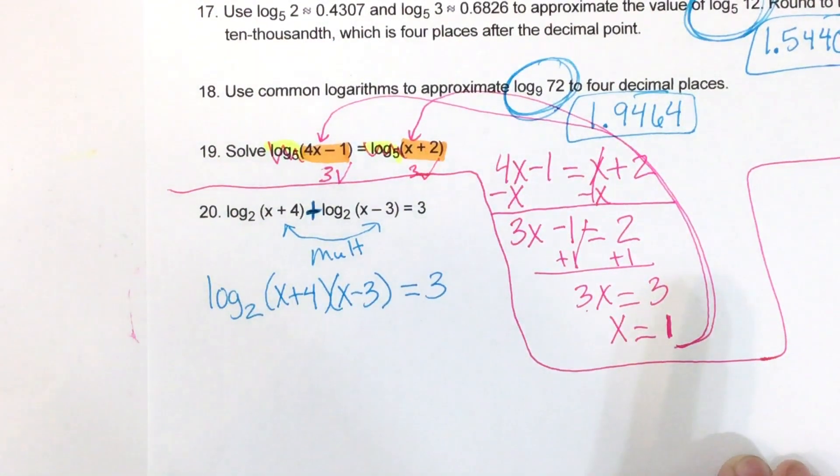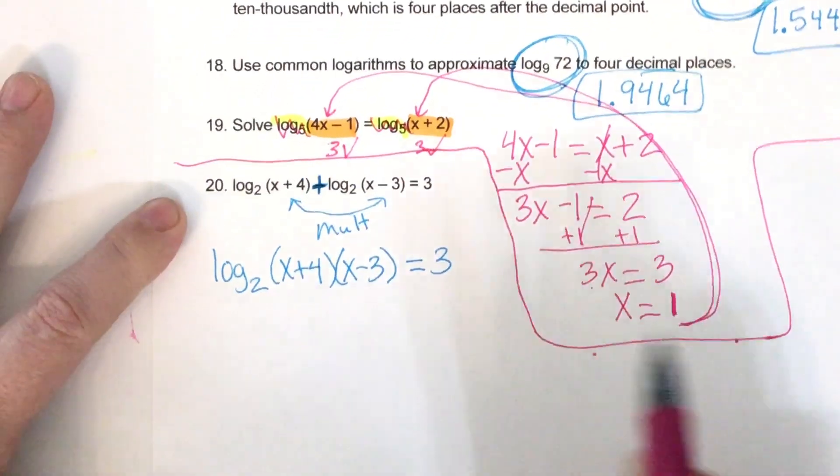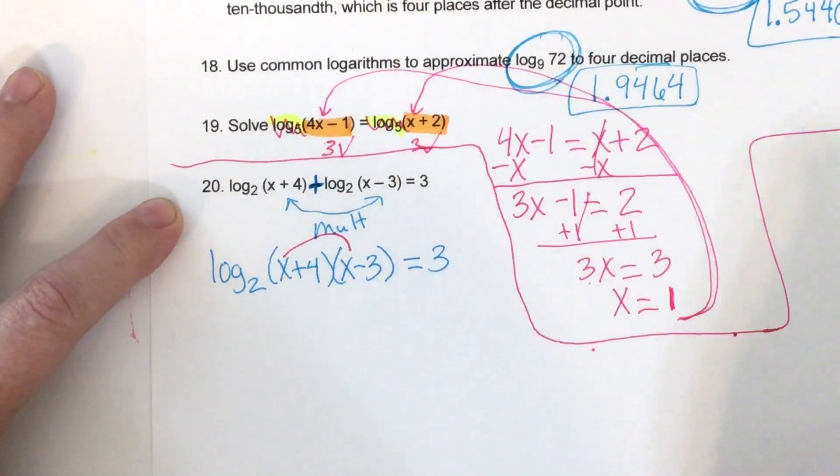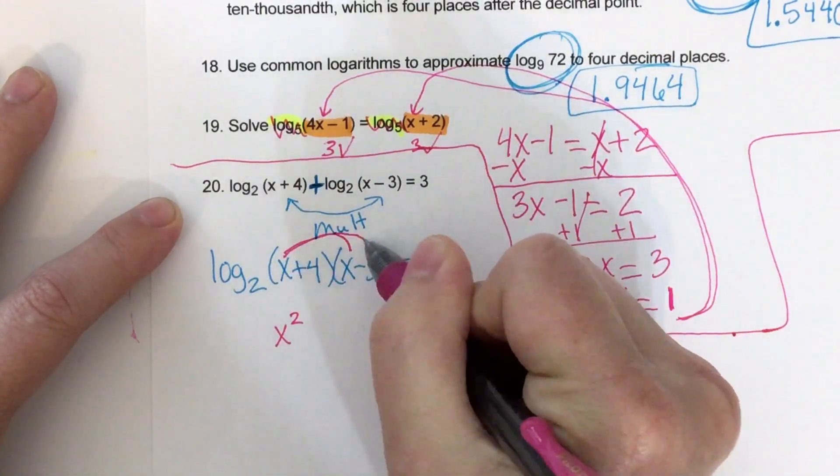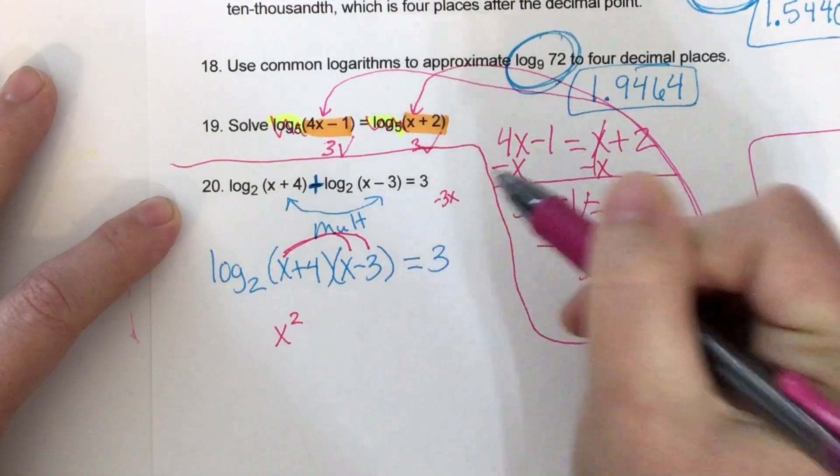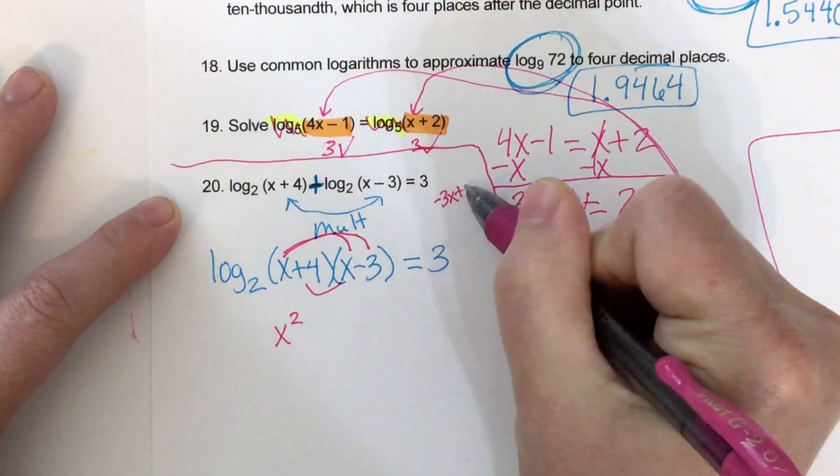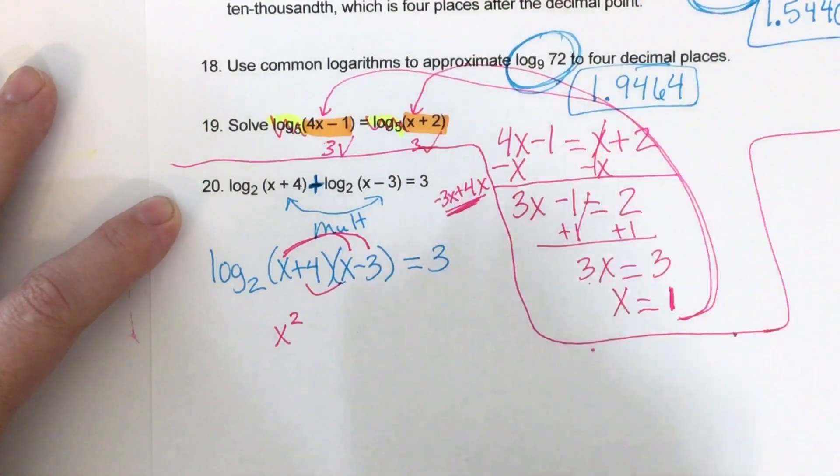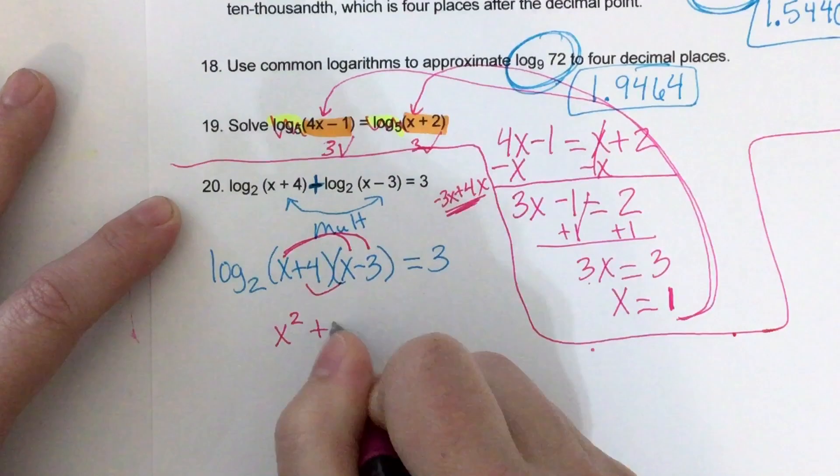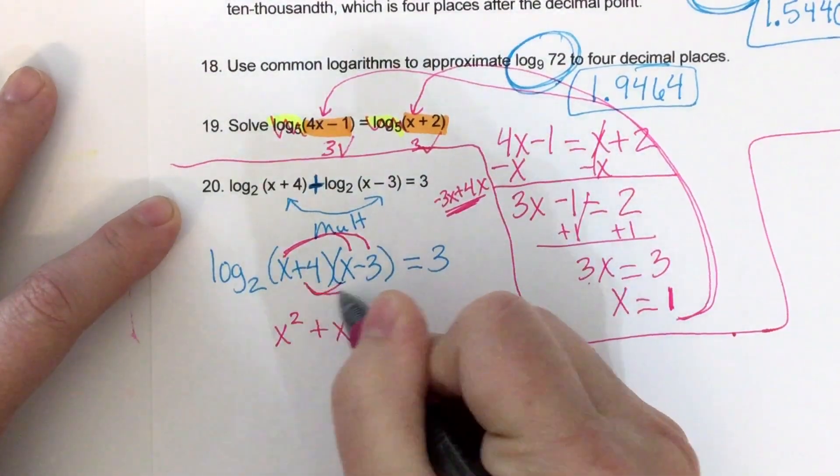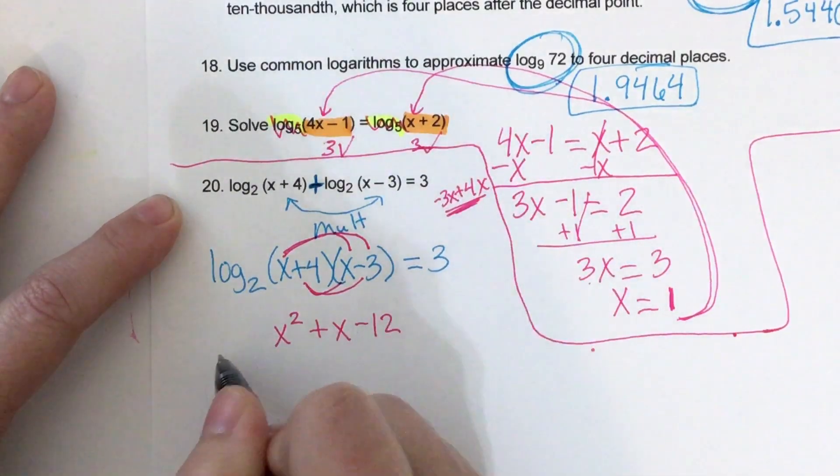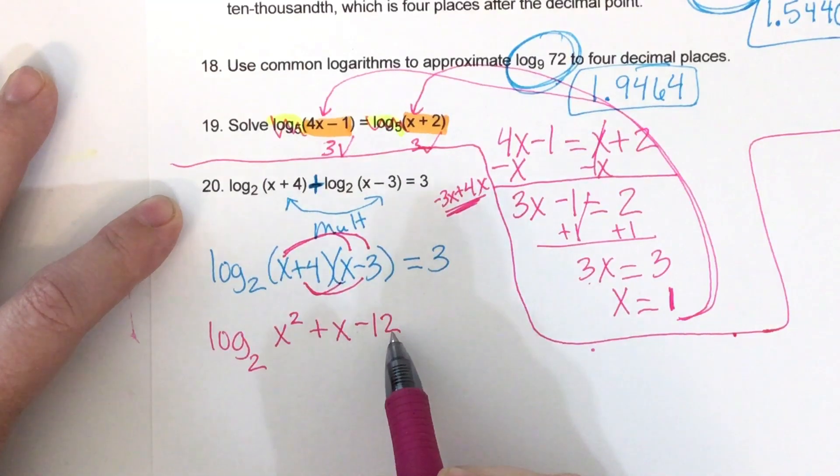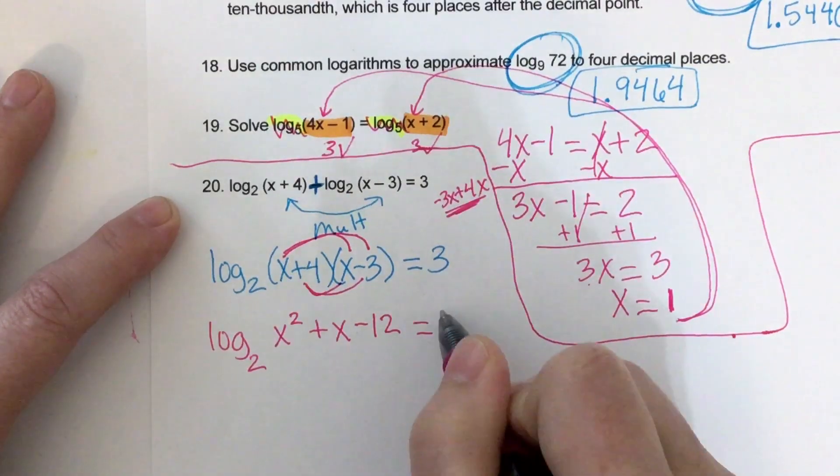Okay. Before I move on, I'm going to go ahead and clean this up. So I'm actually going to multiply this. So x times x is x squared. x times negative 3, I'm going to write it up here as negative 3x. 4 times x is 4x. Well, what do you get if you combine those? 1x or x. And then 4 times negative 3 is negative 12.